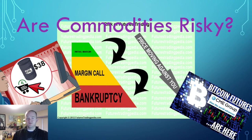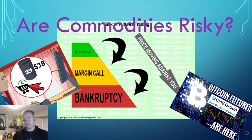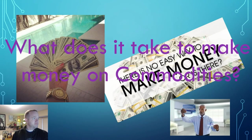Leverage is the main reason so many commodity traders lose money, because that one or two dollar swing can cost people a huge amount. Plus, a lot of people go into commodities on margins, which is kind of like using credit.